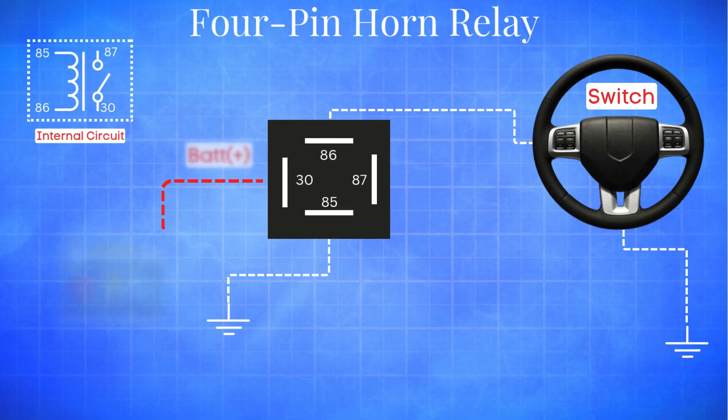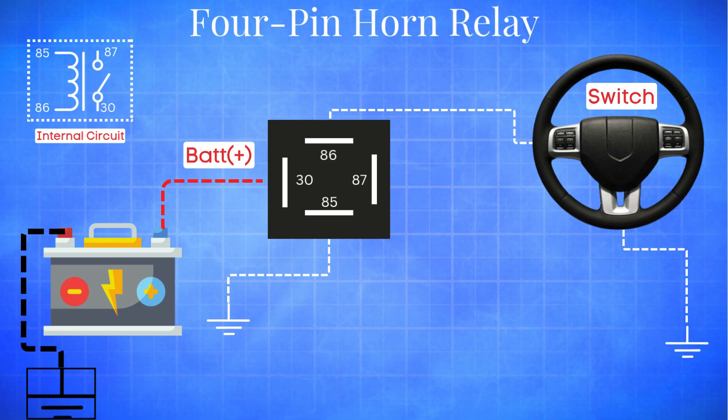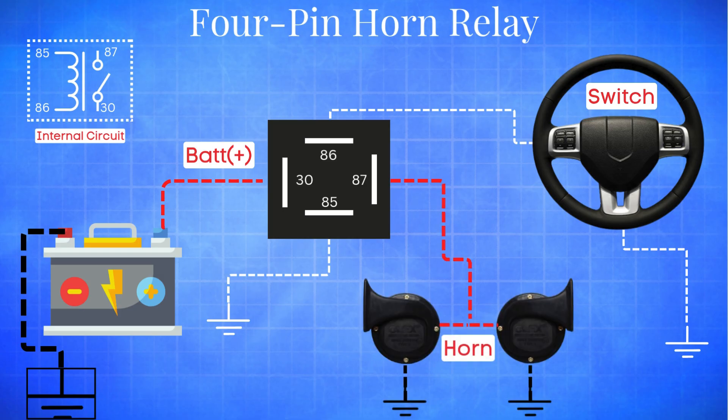Pin 30 is the power input, usually coming from the battery or fuse box. Pin 87 is the output that goes directly to the horn.